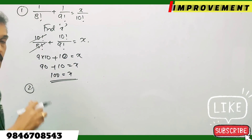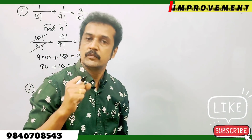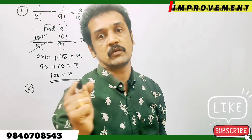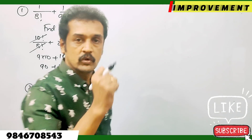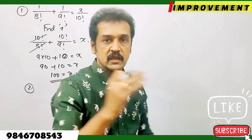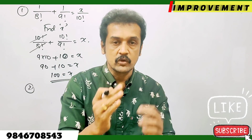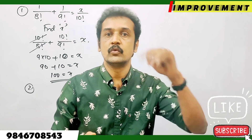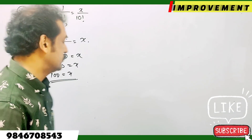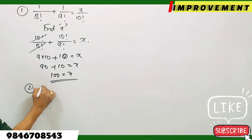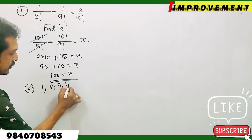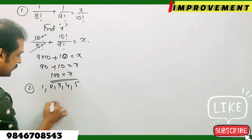How many three-digit numbers can be formed from the digits 1, 2, 3, 4, 5?